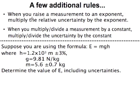There's a couple other rules that flow from the rules we've talked about, but sometimes it's quicker just to think about these rules separately. When you raise the measurement to an exponent, you multiply the relative uncertainty by the exponent itself. So if you had something raised to the power of 4, then you would multiply it by 4. When you multiply and divide a measurement by a constant, the constant doesn't have uncertainties, so all you have to do is multiply or divide the uncertainty by the constant. That would be the absolute uncertainty, not the relative uncertainty. If you had relative uncertainty, then you wouldn't have to do anything with that.